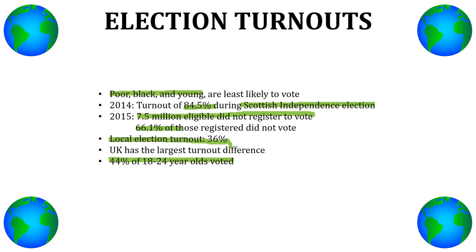Those that are poor, black or young are least likely to vote. Poor people feel less likely to vote because of social polarization — basically inequality arising from different income groups. Higher income people are segregated from lower income people, and that can cause poor people to feel out of place and therefore not want to vote.